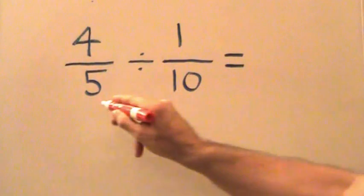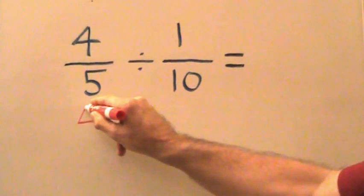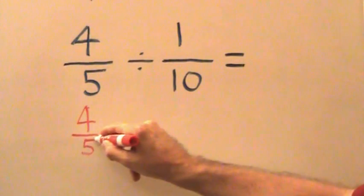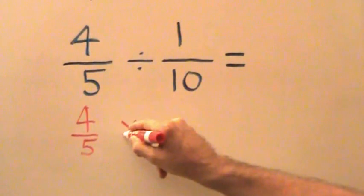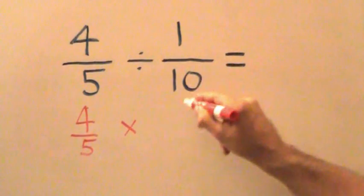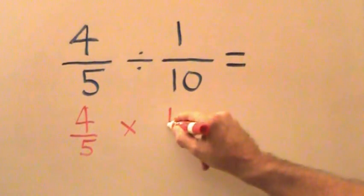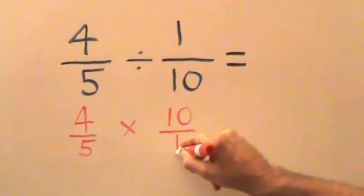So we're going to rewrite the problem right underneath, four-fifths. We're going to multiply and flip the second fraction, and instead of one-tenth we'll make it ten over one.